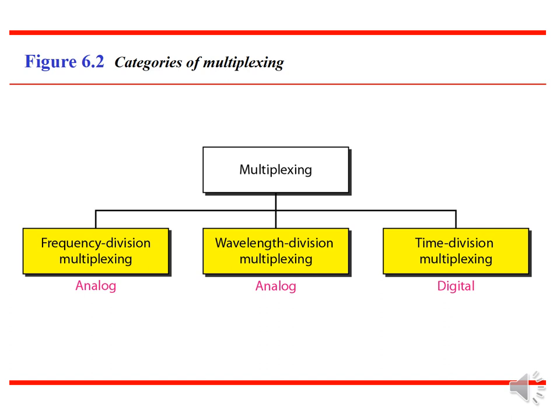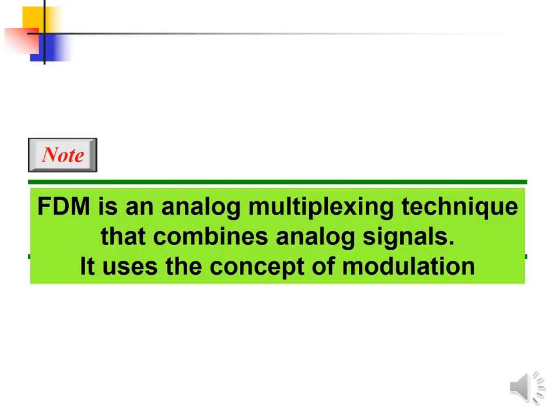In the categories of multiplexing, the given signal may be either analog or digital. For analog signals, we can use frequency division multiplexing and wavelength division multiplexing. If the given signal is digital, we can use time division multiplexing. FDM is an analog multiplexing technique that combines analog signals and uses the concepts of modulation.